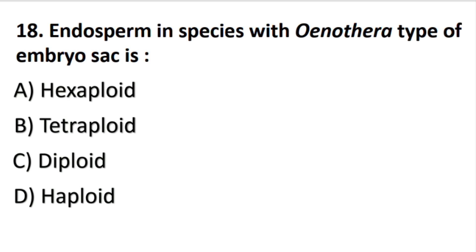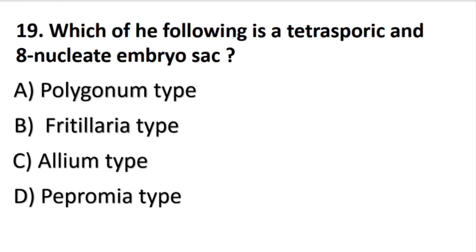Endosperm in species with Oenothera type of embryo sac is — the answer is C part: diploid. Which of the following is a tetrasporic and 8-nucleate embryo sac? The answer is B part: Fritillaria type.